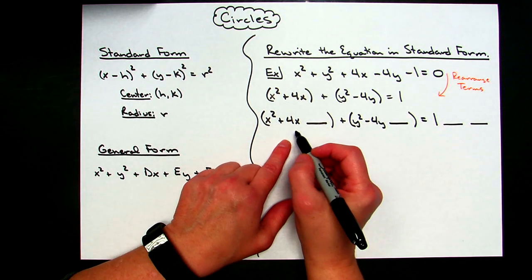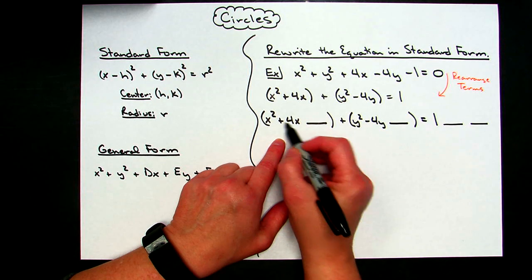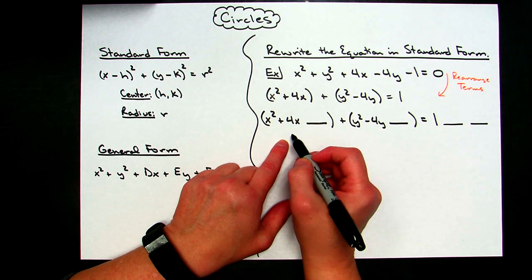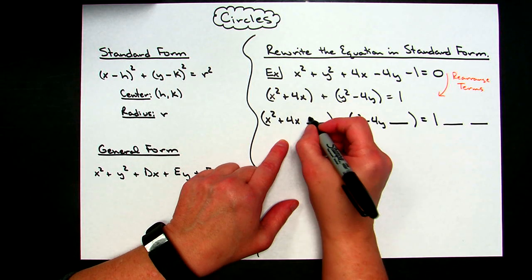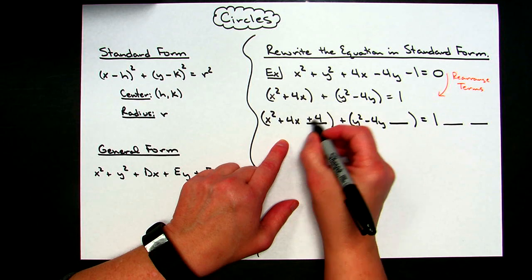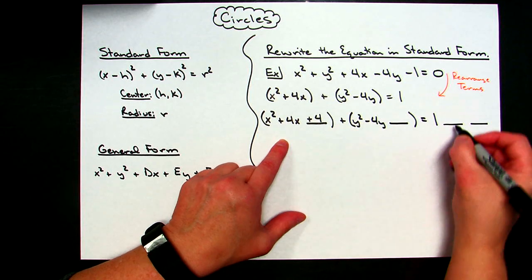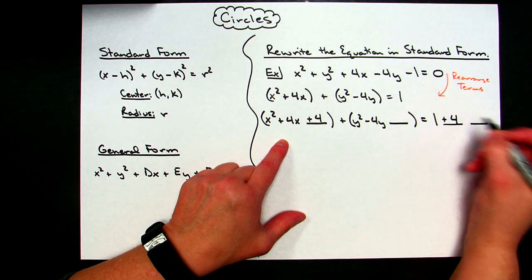Now if you remember how to complete the square, you take half of that middle term, which is 2, and then square. 2 squared is 4. So I'm going to have a plus 4 there. If I put a plus 4 right there, I also have to do it on the right-hand side to keep my equation balanced.